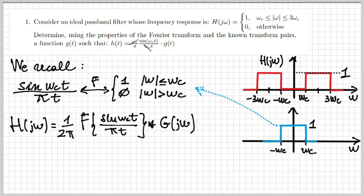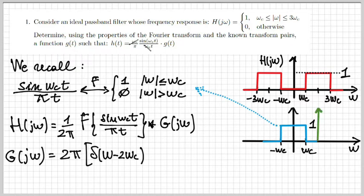So h of j omega is given by 1 over 2 pi, the convolution between two Fourier transforms. Why is that? Well, it's because h of t is the product of two things, as you can see in the text of the exercise, so the sinc times g. So because of the multiplication property, a multiplication in the time domain corresponds to a convolution in the frequency domain. So that's why I have that h of j omega is the convolution between two Fourier transforms. The first one, which I have already calculated, and the second one, which is the Fourier transform of g of t, which I indicate as g of j omega.